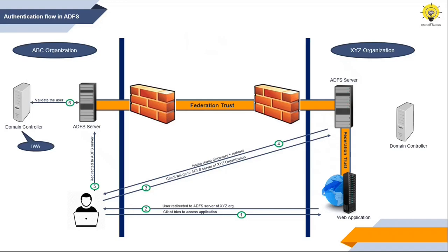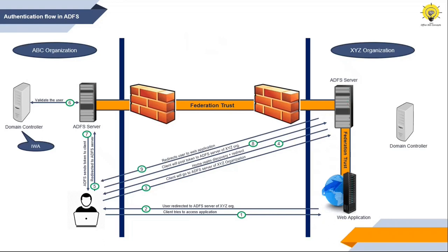The domain controller will authenticate the user using integrated Windows authentication. Once the domain controller validates the user, ADFS will construct a token, sign it using the private key of the token signing certificate, and send that token to the client. The client will post this token to the ADFS server of XYZ organization, which will use the public key of the token signing certificate to validate the token. If valid, it will create a new token and share it with the client, who will pass it to the application, granting the user access.